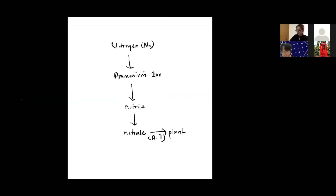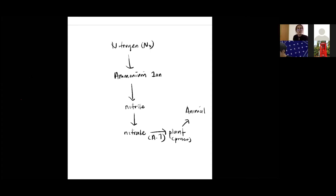The nitrate will be used by the plant to make protein. The protein will then be eaten by the herbivores — so the protein in the plant will enter the herbivores.